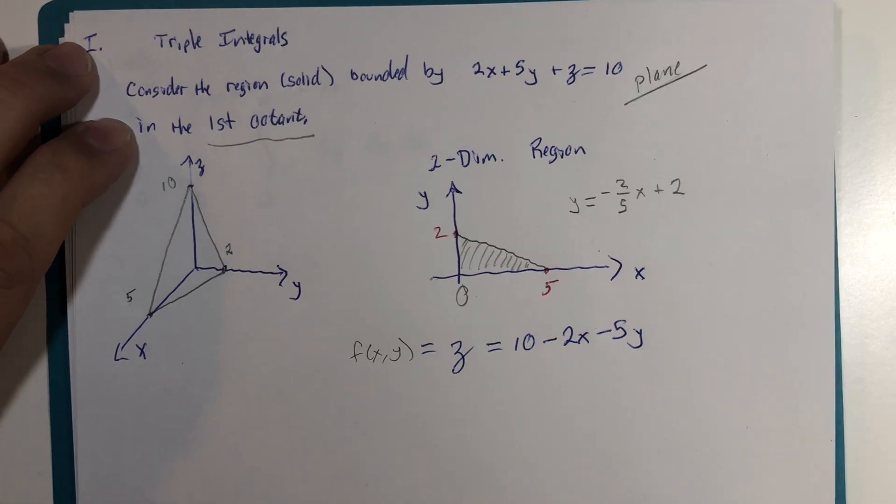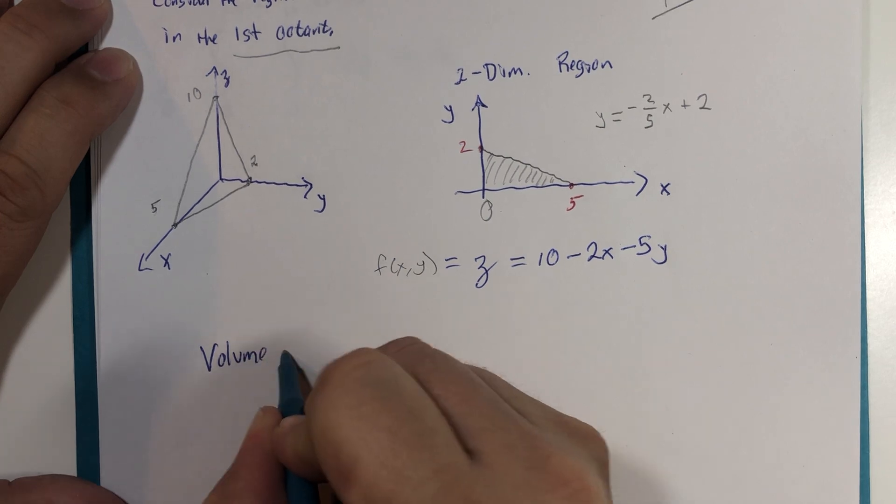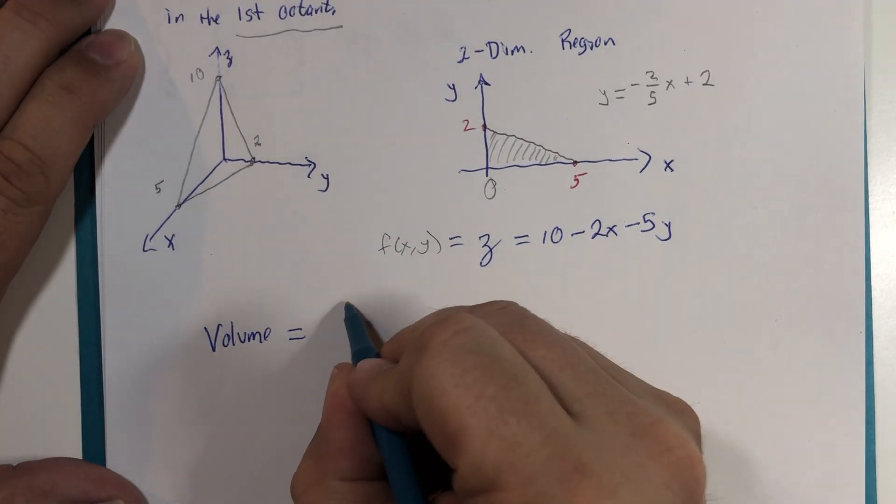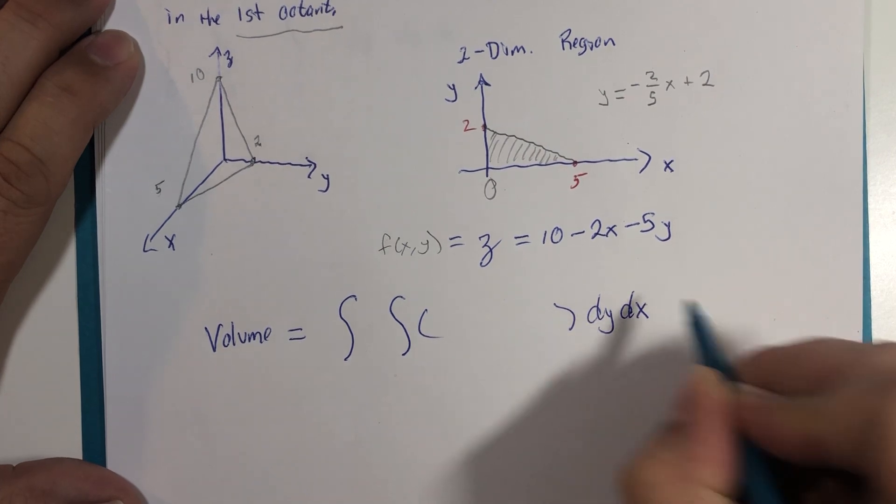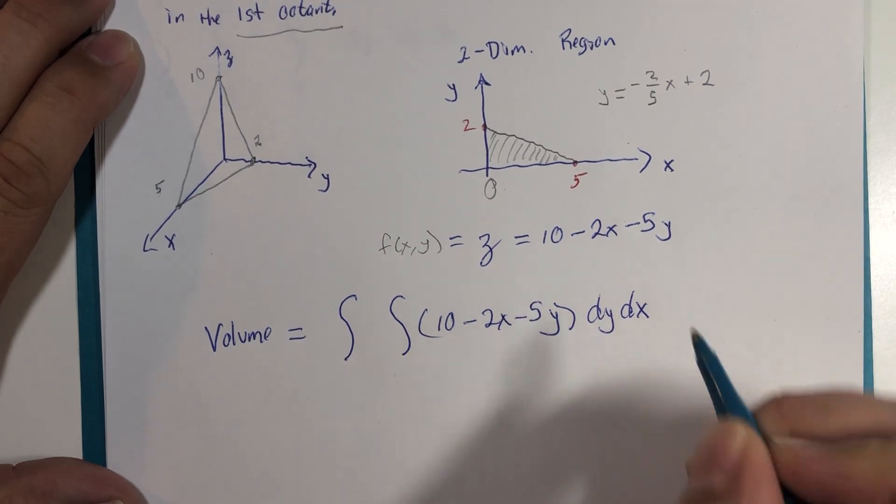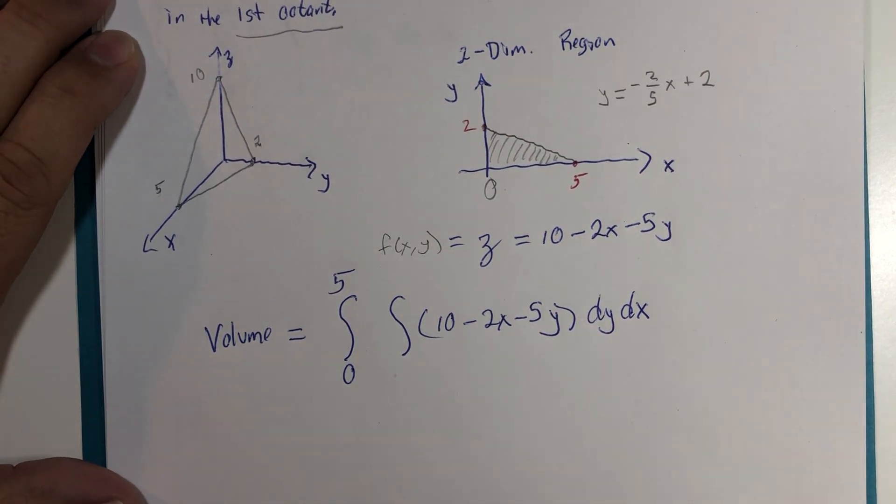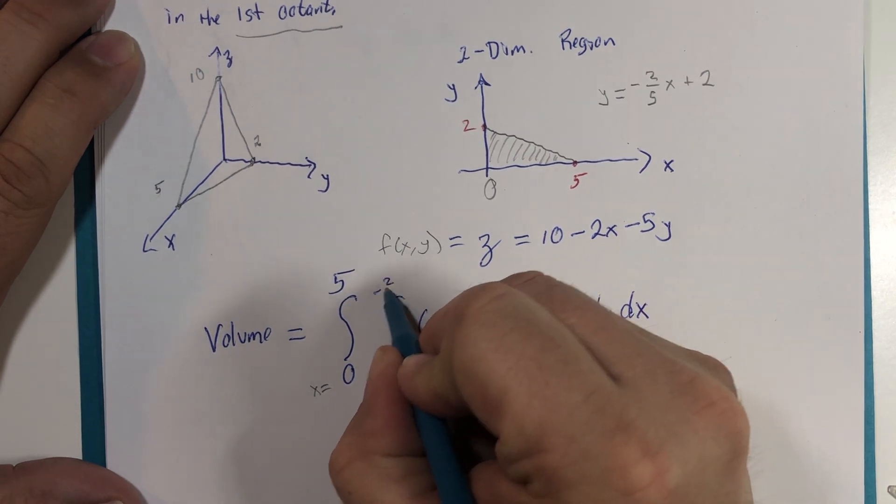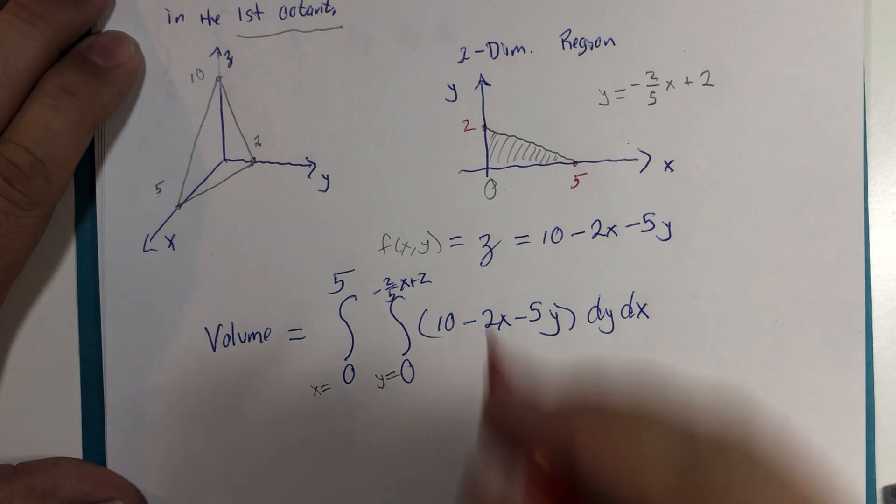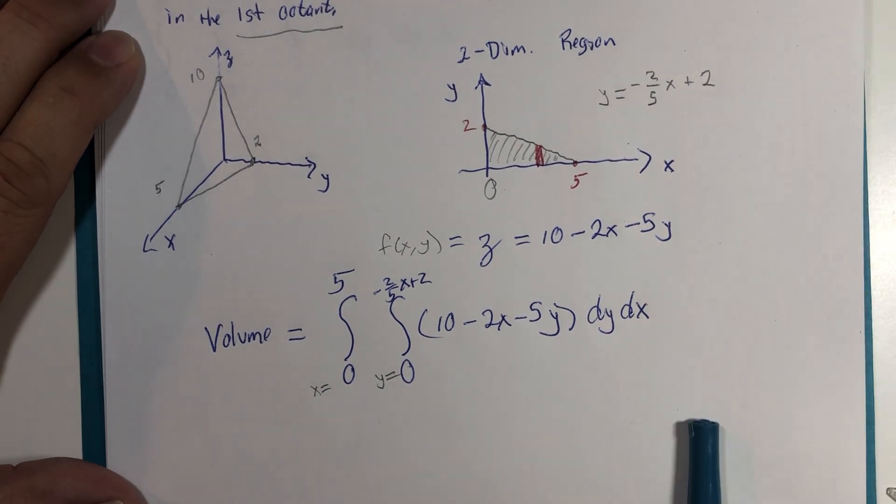So here's what we would have based on the previous sections we've been talking about. Volume would be equivalent to the double integral. And I'm going to go in the order dy dx. 10 minus 2x minus 5y. And x is going to be from 0 to 5. And y, I claim, starts at 0. y equals 0 is the x-axis to y equals the equation of the line, negative 2 fifths x plus 2. If we were to use these vertical rectangles as representations. So that's our volume from what we've done previously.